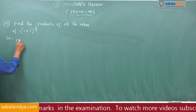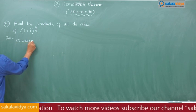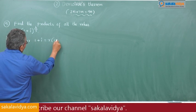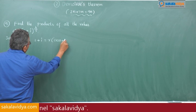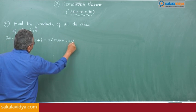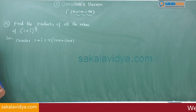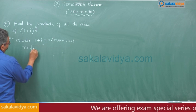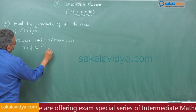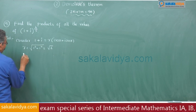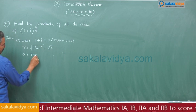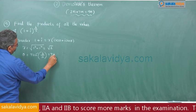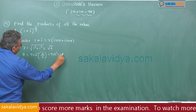Consider 1 plus i is equal to r into (cos θ + i sin θ). Now, r equals root of (1 squared plus 1 squared), that is root 2. And θ equals tan inverse (b by a), which equals tan inverse 1, that is 45 degrees.